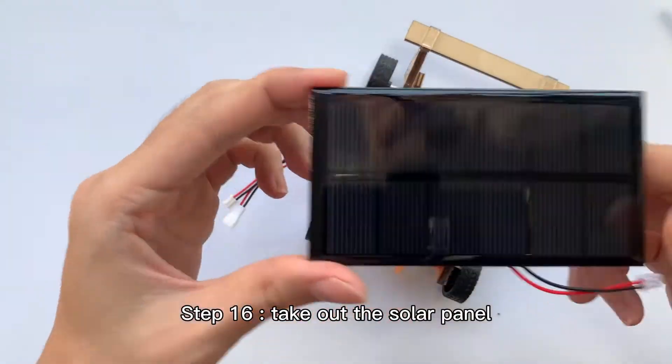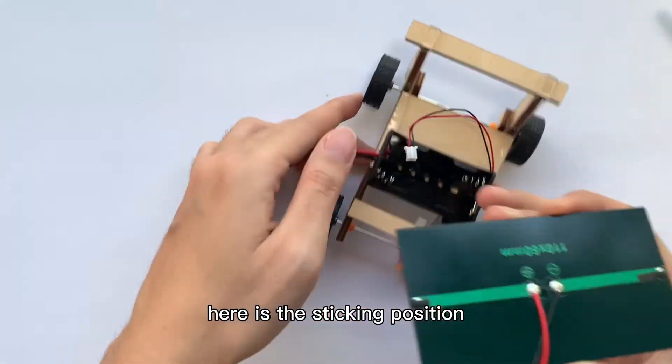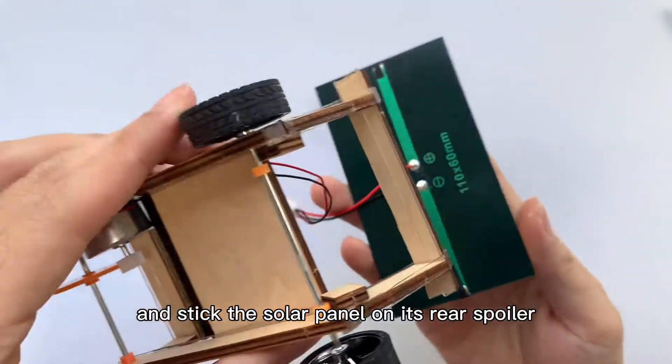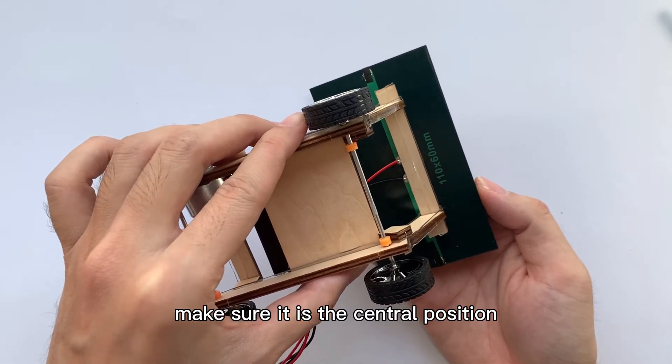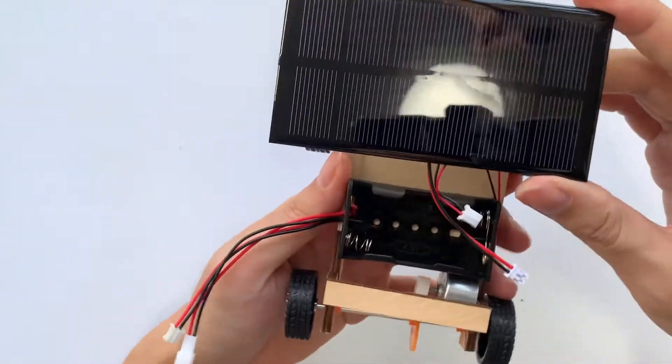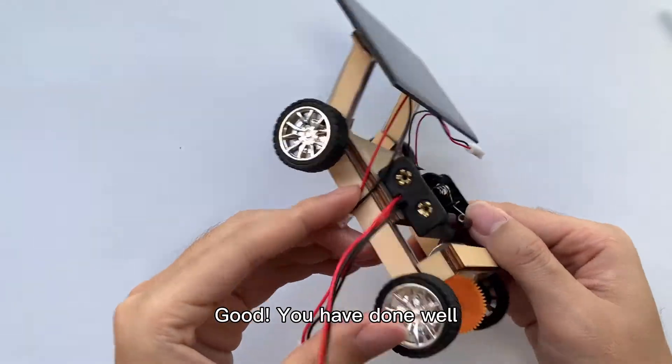Step 16: Take out the solar panel. Here is the sticking position. Take the car and stick the solar panel on its rear spoiler. Make sure it is the central position. Good. You have done well.